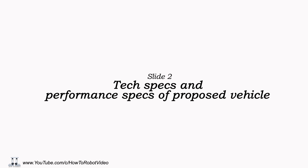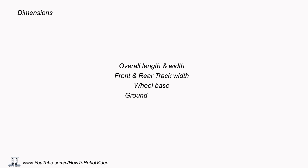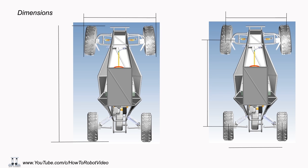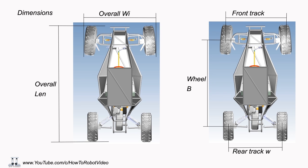Slide 2: Technical Specs and Performance Specs of the proposed vehicle. In this slide, we have to write the dimensions of the vehicle: overall length, overall width, front and rear track width. The overall dimensions are those of the smallest box in which your vehicle can fit. Wheel width is the distance between the centers of the front and rear wheels, and track width is the distance between the centerlines of two road wheels on the same axle. Track width for front and rear wheels can be different.